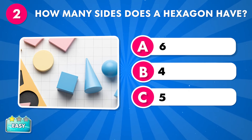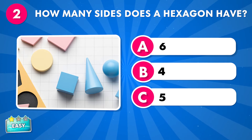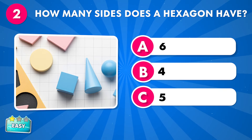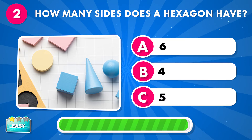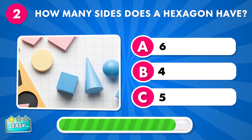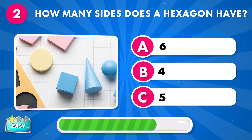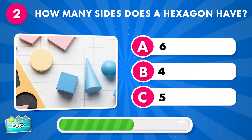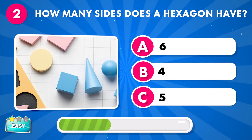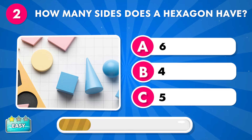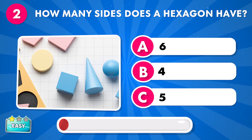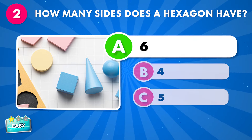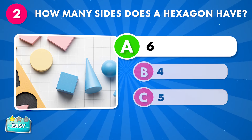How many sides does a hexagon have? A: 6, B: 4, C: 5. It's six.